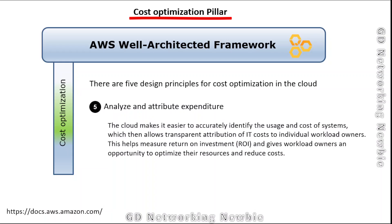The fifth principle is analyze and attribute expenditure. The cloud makes it easier to accurately identify the usage and cost of systems, which allows transparent attribution of IT costs to individual workload owners. This helps measure return on investment and gives workload owners an opportunity to optimize their resources and reduce costs using usage pattern data.